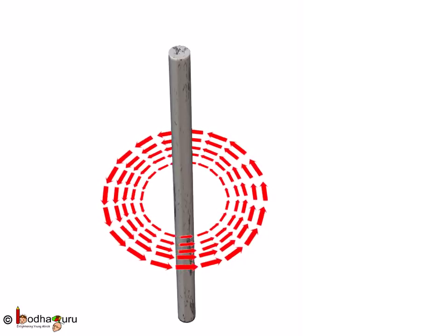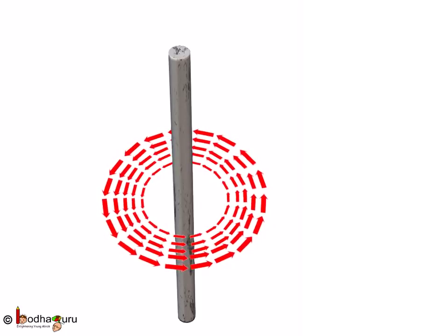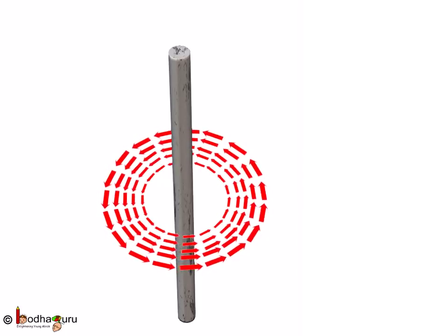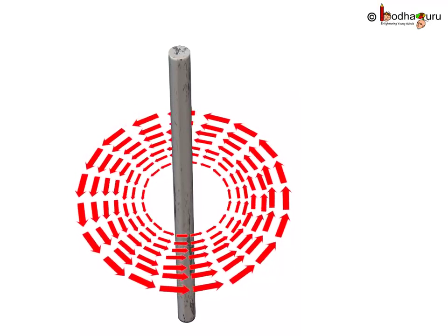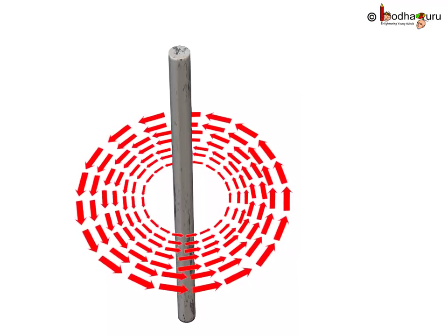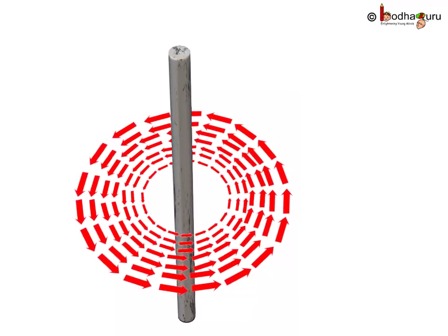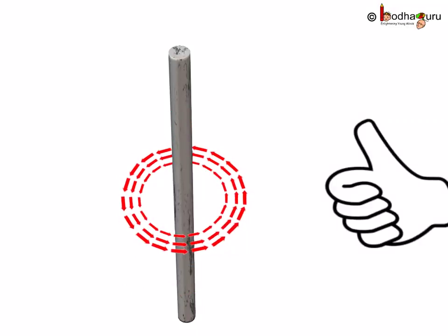Thus we can say the magnetic field lines are formed in concentric circles around the current carrying conductor and these lines do not intersect each other. Also, they are equidistant from each other.